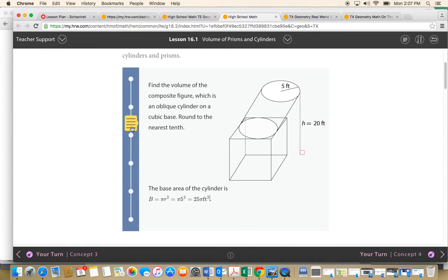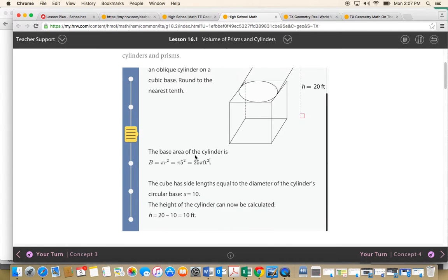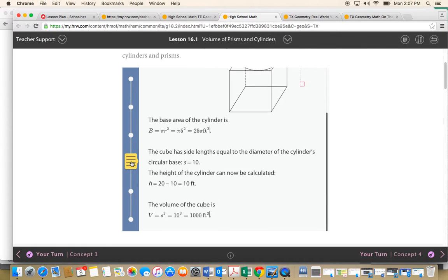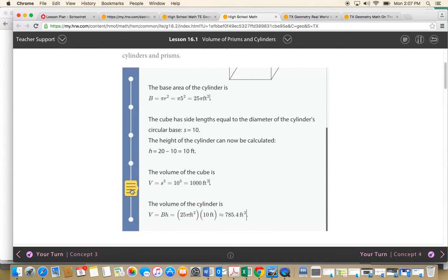First we're finding the base area of the cylinder. Then we're looking at the cube, and the height of the cylinder can be calculated. Now we have the volume of the cube and the volume of the cylinder.